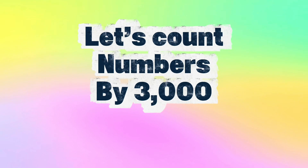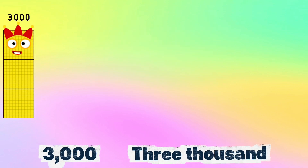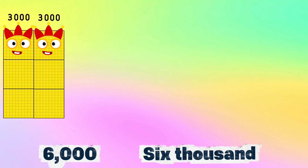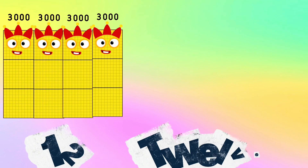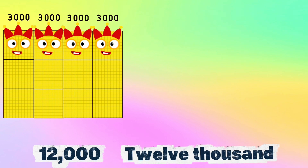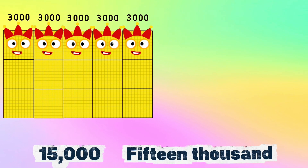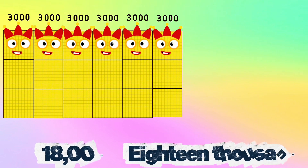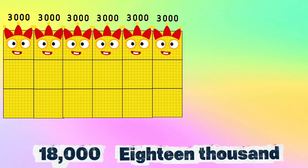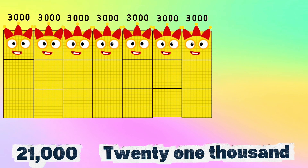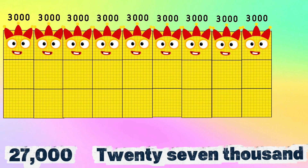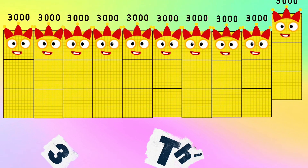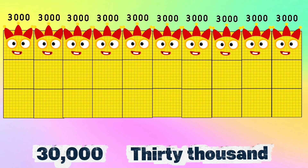Join me and let's count numbers by 3,000: 3,000, 6,000, 9,000, 12,000, 15,000, 18,000, 21,000, 24,000, 27,000, and 30,000.